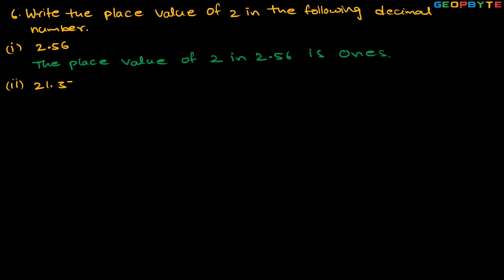The second one is 21.37. We need to identify the place value of 2. After the decimal point we have one at the ones place, and two is at the tens place. So the place value of 2 in 21.37 is tens.